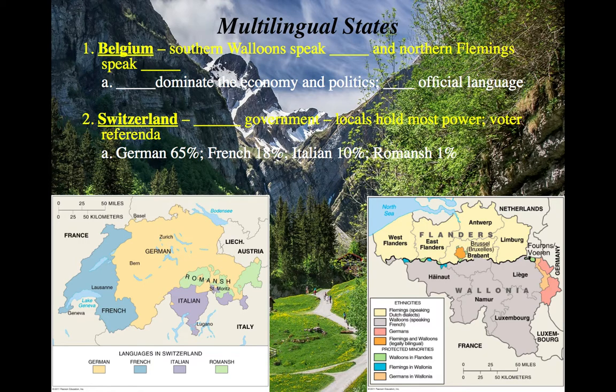Switzerland, on the other hand, is an example of a country with a decentralized government — they don't have a strong central government. They allow the decision on language to be made by the people who live in those particular areas. That's why Switzerland has four official languages: German, French, Italian, and Romansh. They let the people decide within those local areas.